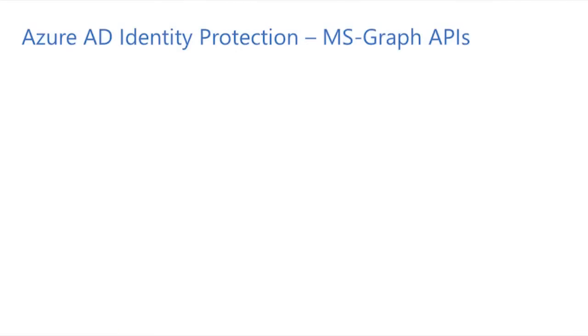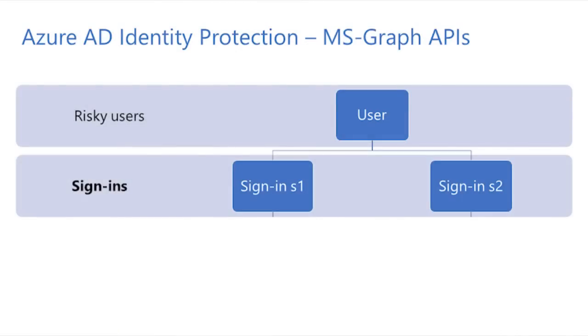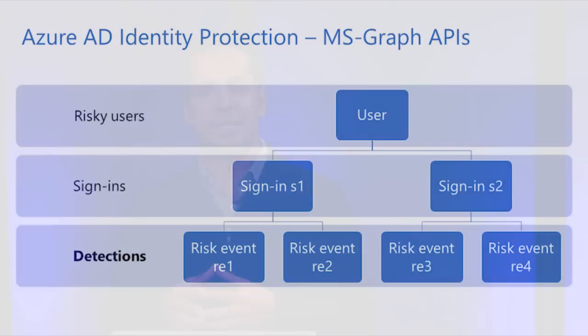The UI is just the tip of the iceberg — the enhancements are at every layer. Behind the UI, you'll find some very powerful Microsoft Graph APIs. Customers can use these APIs to get information on risky users, risky sign-ins, or just the underlying detections. Now let's look at our risk assessment engine, where we've made a lot of improvements.